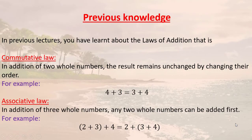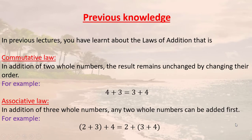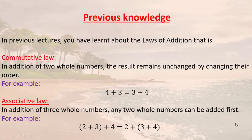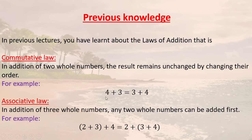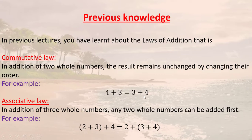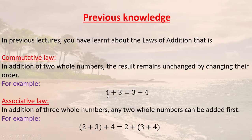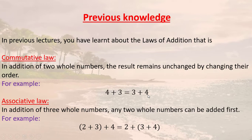Firstly, we recall the previous knowledge. In previous lectures, you have learnt about the laws of addition. Commutative law: in addition of two whole numbers, the result remains unchanged by changing their order. For example, 4 plus 3 is 7, and 3 plus 4 is again 7. The result remains same by changing the order. This is the commutative law of addition.